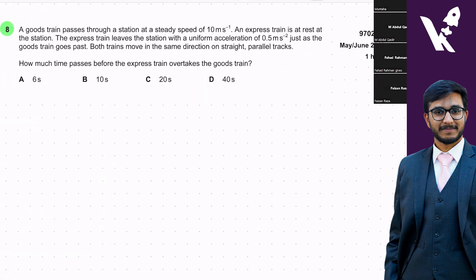A goods train passes through a station at a steady speed of 10 meters per second. An express train is at rest at the station. The express train leaves the station with a uniform acceleration of 0.5 just as the goods train goes past. Both trains move in the same direction on straight parallel tracks. How much time passes before the express train overtakes the goods train?